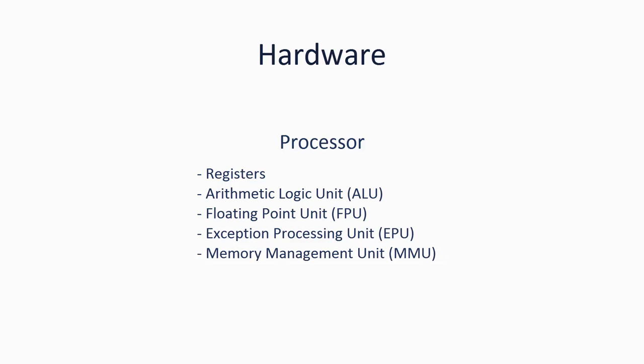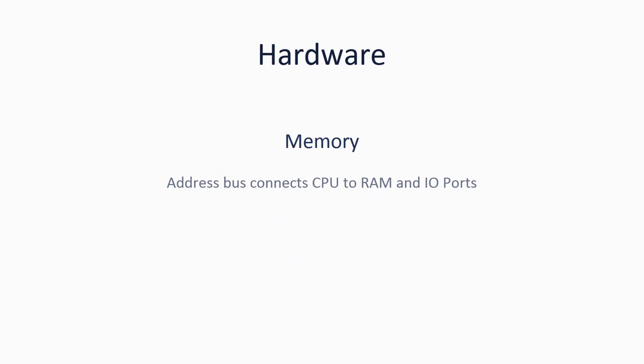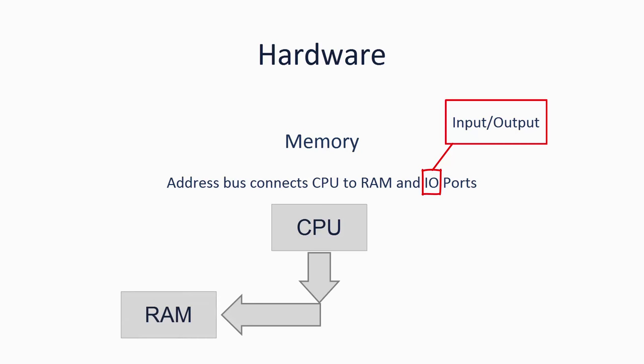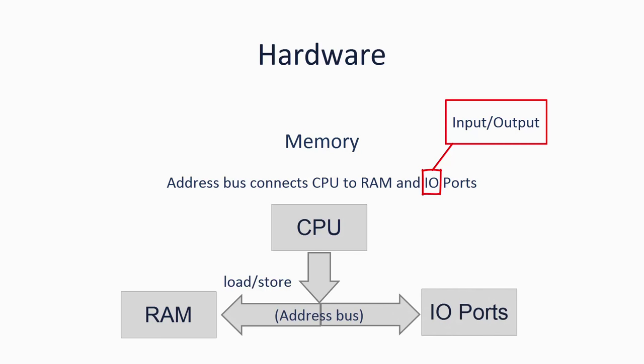The address bus connects the CPU to RAM and things called I/O ports — I/O meaning input/output. RAM is addressed normally from 0 to 2 to the power 32 or 64, depending on the architecture. RAM is accessed using load and store instructions, and also by giving the processor an address in a register and telling the processor to use the data at that address — this sort of data access is called memory indirect via a register. However, there are these other things called I/O ports, which are also attached to the address bus. These allow you to send data to and receive data from attached devices, and this is the oldest common way of communicating with devices. I/O ports are also addressed from 0 to 2 to the power of 32 or 64, again depending on the size of the architecture.